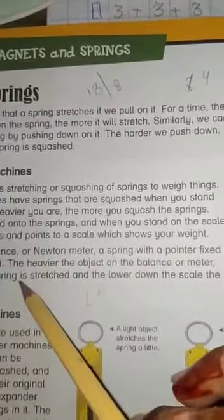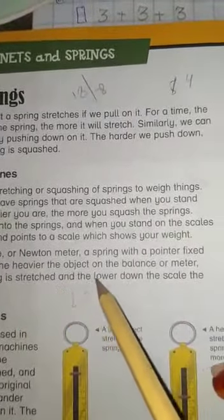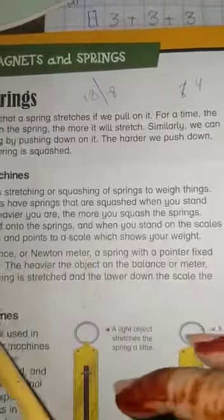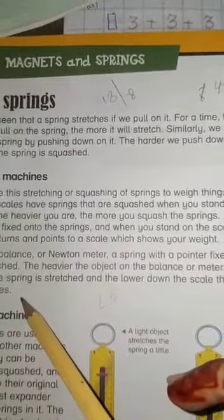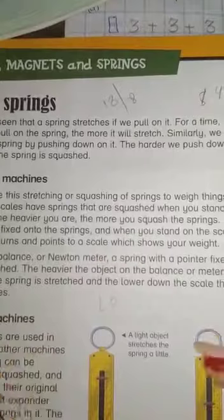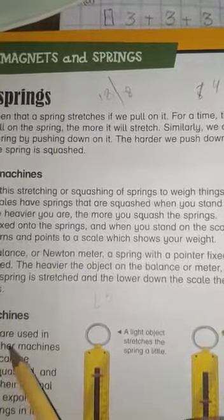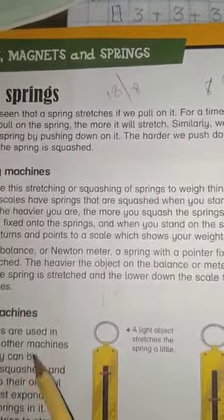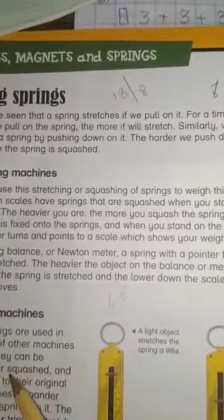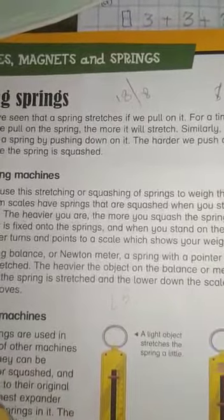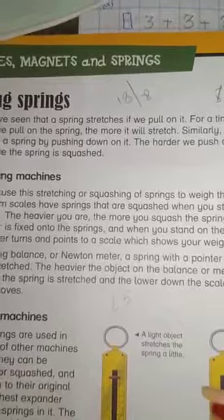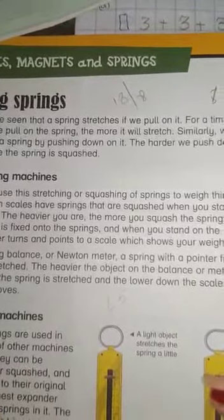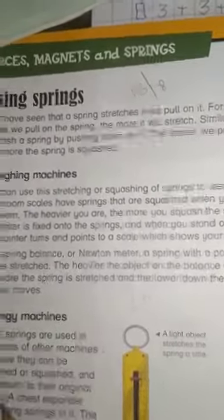With springs in machines, metal springs are used in hundreds of other machines because they can be stretched or squashed and then return to their original shape. In an earpiece, it returns to its original shape.